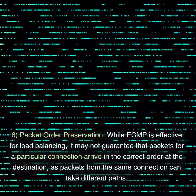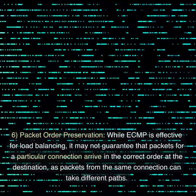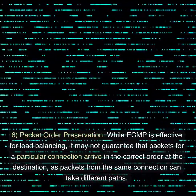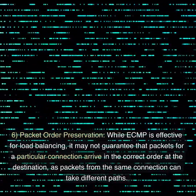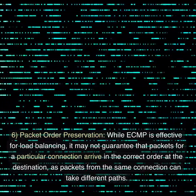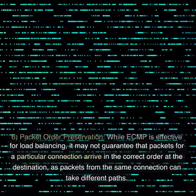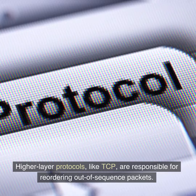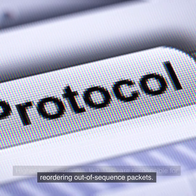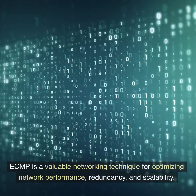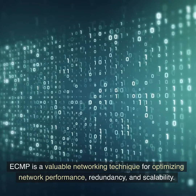6. Packet Order Preservation: While ECMP is effective for load balancing, it may not guarantee that packets for a particular connection arrive in the correct order at the destination, as packets from the same connection can take different paths. Higher layer protocols, like TCP, are responsible for reordering out-of-sequence packets.